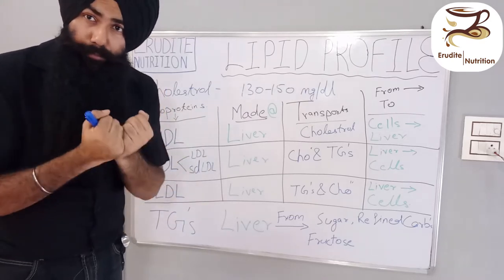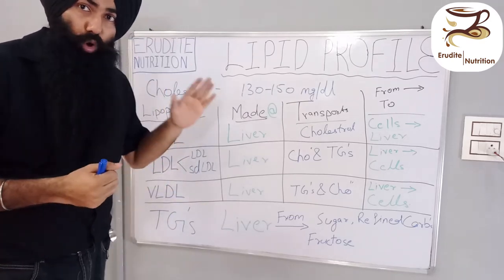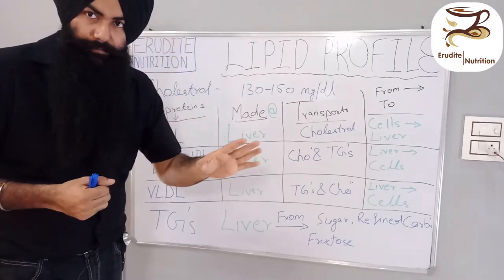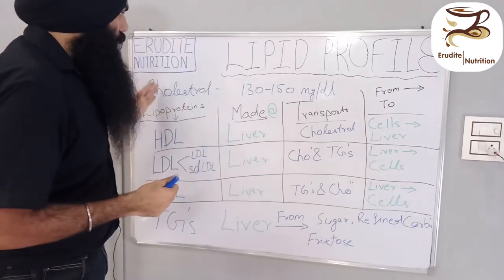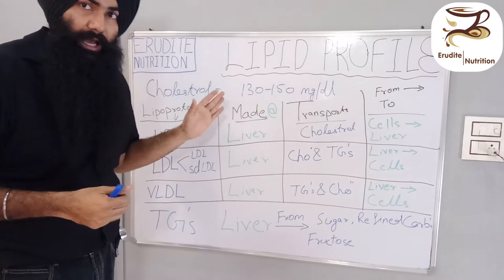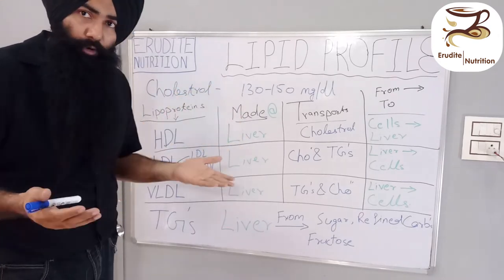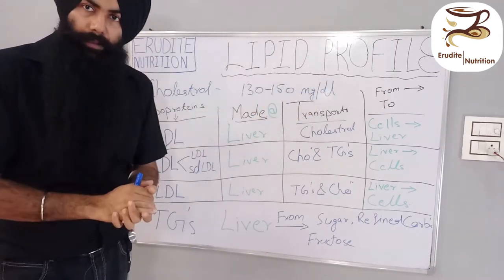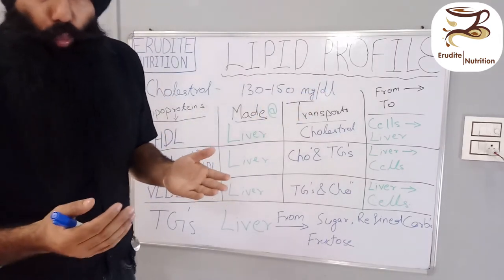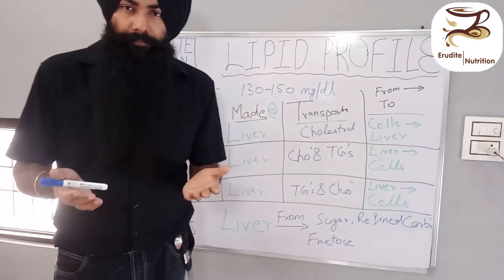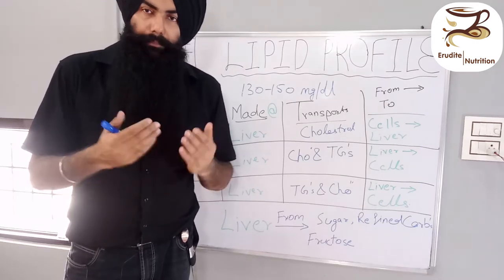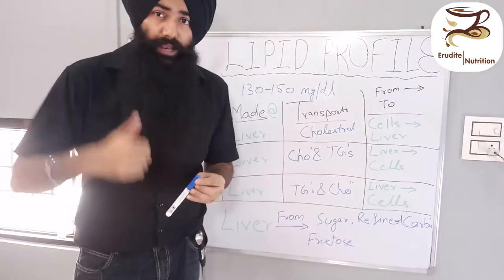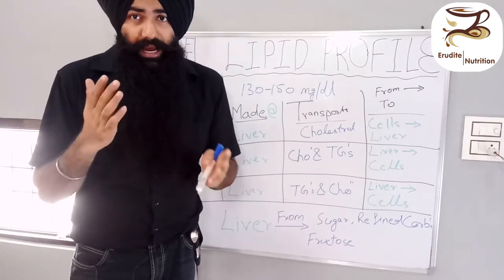We have already discussed what cholesterol does in our body and why it's important. If you haven't watched that video, go and watch it. The normal range of cholesterol in a lipid profile panel is 130 to 150 mg per dL. If it is above the normal range, there may be underlying causes that have elevated your cholesterol level, and we need to check your lifestyle and diet.